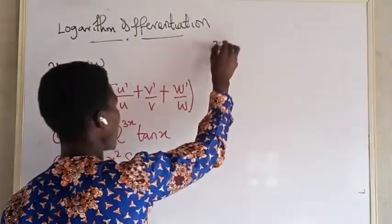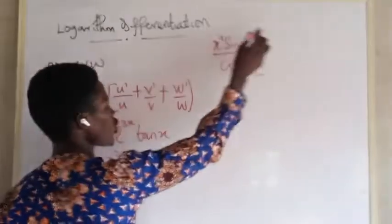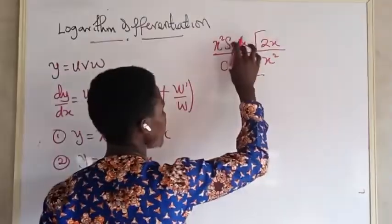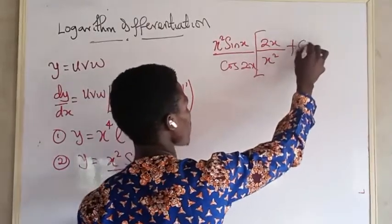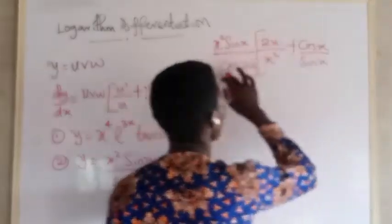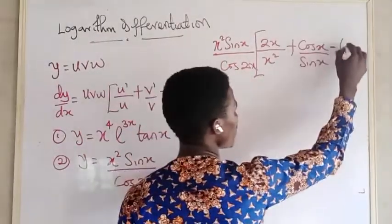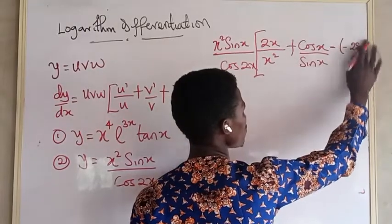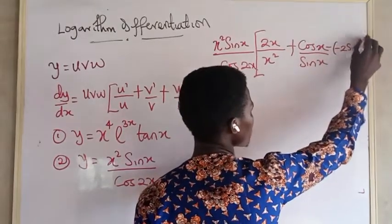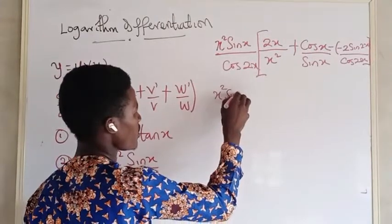That will be: x² · sin(x) over cos(2x), multiplied by the bracket. Differentiating x² gives 2x, so we write 2x over x², which simplifies to 2 over x. Differentiating sin(x) gives cos(x), so plus cos(x) over sin(x). Since cos(2x) is in the denominator, it becomes minus. Differentiating cos(2x) gives minus 2 sin(2x), so this term becomes minus 2 sin(2x) over cos(2x).